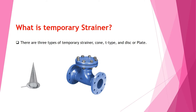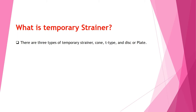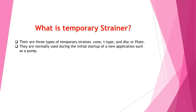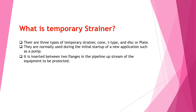There are three types of temporary strainer: cone, T-type, and dish or plate. They are normally used during the initial startup of a new application such as a pump. It is inserted between two flanges in the pipeline upstream of the equipment to be protected.